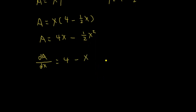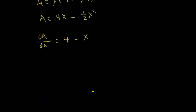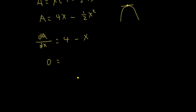To get the value of x that will maximize the area of the rectangle, we have to find the maximum point. This area function is a downward-opening parabola because of the negative sign in front, so at the maximum the slope of the curve equals zero. We set dA over dx equal to zero: 4 minus x equals zero. Adding x to both sides, x is equal to 4.